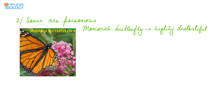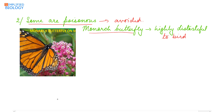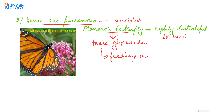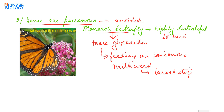Another adaptation is that some animals become poisonous so that they are avoided by predators. For example, the monarch butterfly becomes highly distasteful to the bird that preys on it, due to toxic glycosides which it acquires by feeding on the poisonous milkweed during the larval stage.